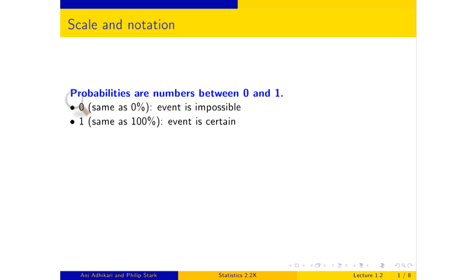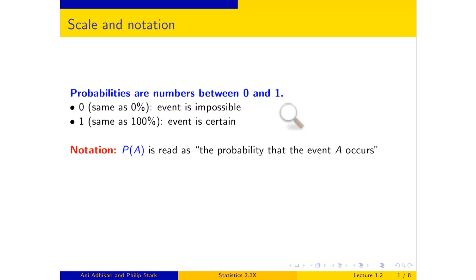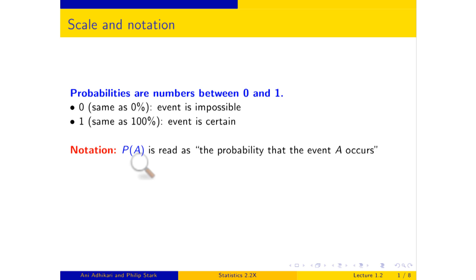The word probability is rather long and we are lazy, so we will use some notation. Events — the things whose probabilities we are going to calculate — are usually denoted by letters early in the alphabet: A, B, C and so on. This notation is read as 'the probability that A happens,' or simply 'probability of A,' 'chance of A.'